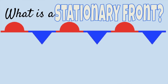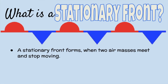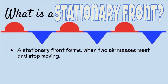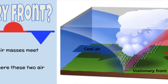So what is a stationary front? A stationary front forms when two air masses meet and stop moving — it becomes stationary. Clouds and precipitation will form where these two air masses meet. Here's an example of warm air and cool air at a stationary front.